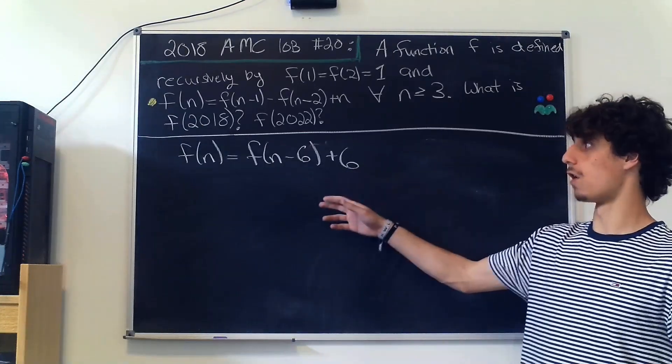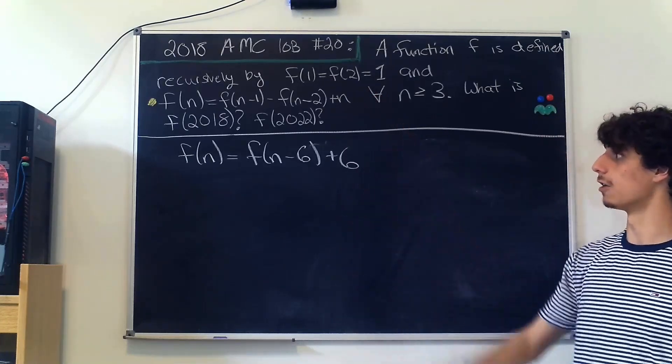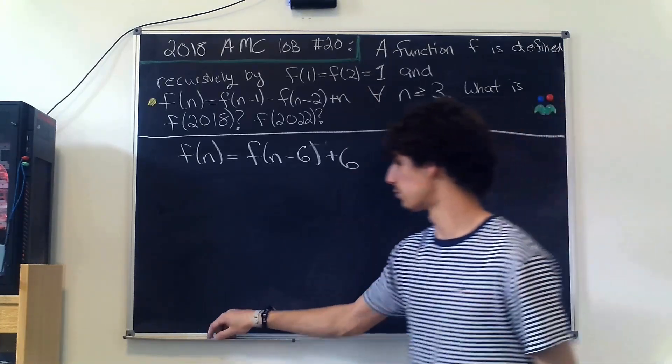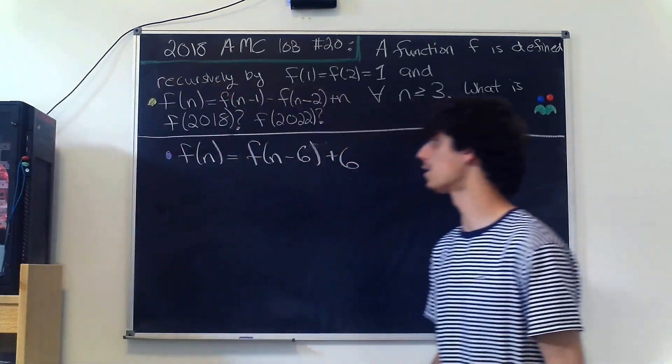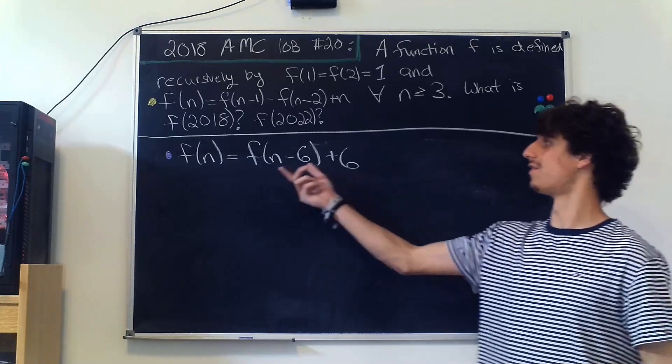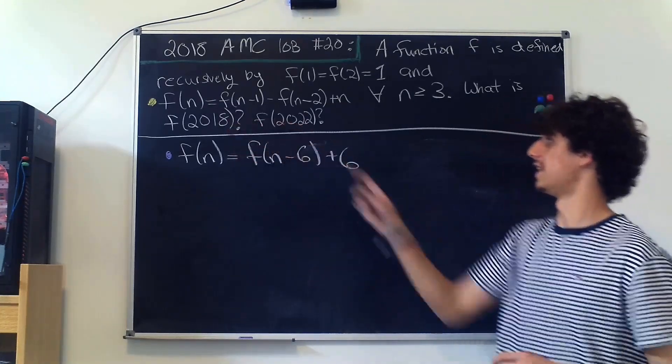Okay, so what we've done so far is we've taken this recursive definition that I've given a yellow dot over there and we reduced it to this recursive definition that I'll define with a purple dot right here. And this one is very easy to work with when we're reducing large numbers like 2018 and 2022.